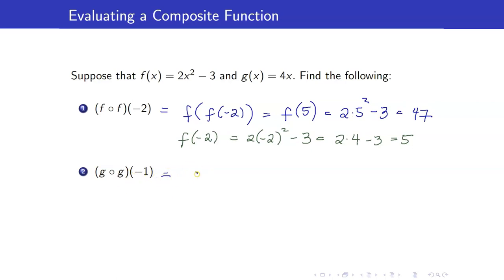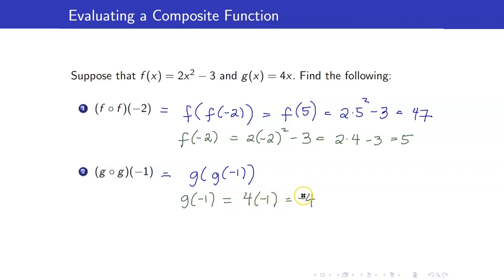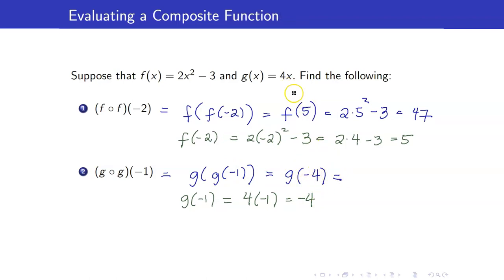Next, let's get g circle g of negative 1. g of negative 1 is 4 times negative 1, which is negative 4. We now replace g of negative 1 by negative 4, so I now have g of negative 4. g of negative 4 is 4 times negative 4, which is equal to negative 16.